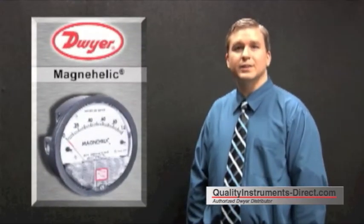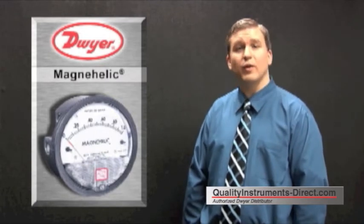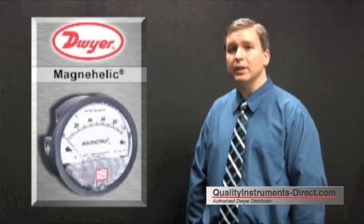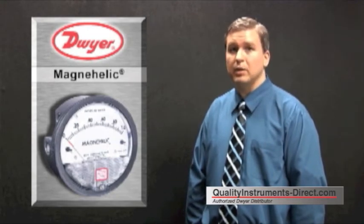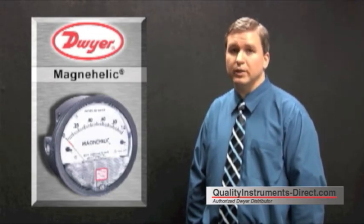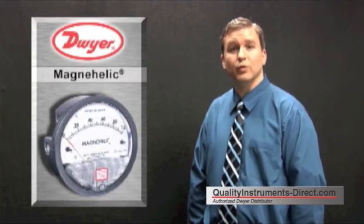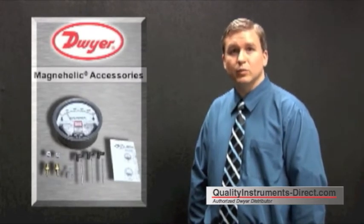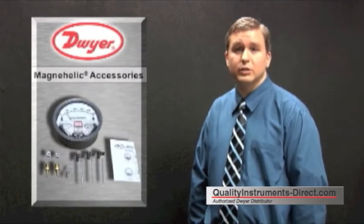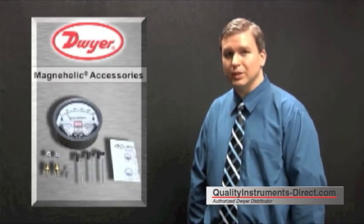There are many accessories available that combine with the Magna Helic Differential Pressure Gauge, providing the flexibility to be mounted in a variety of different configurations. It may be mounted in a panel, surface mounted, hung on a nail or hook, or even mounted in a weatherproof enclosure. The Magna Helic Gauge comes standard with several screws and lugs to assist in its various mounting configurations, which we will soon demonstrate.